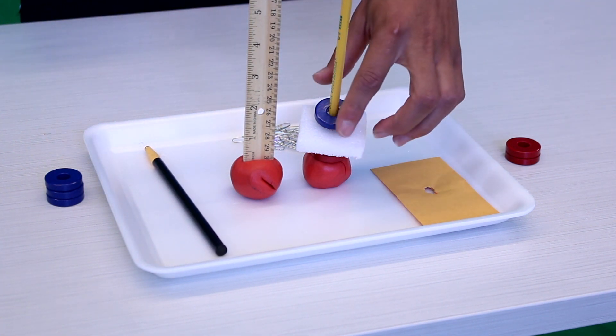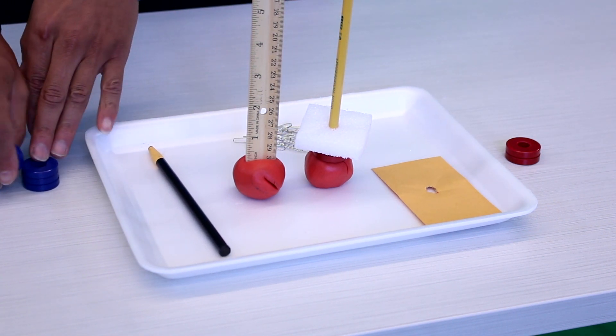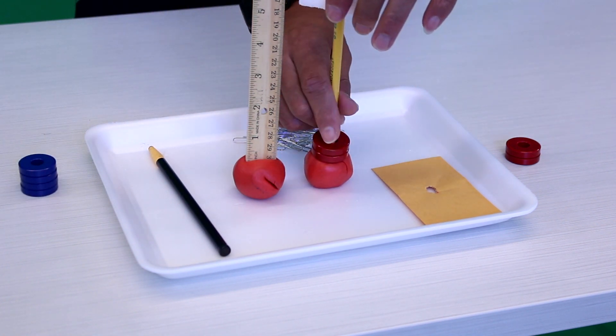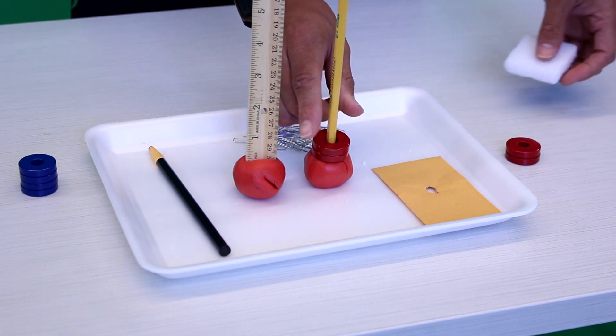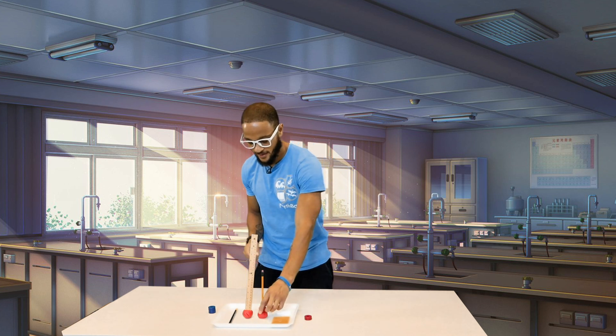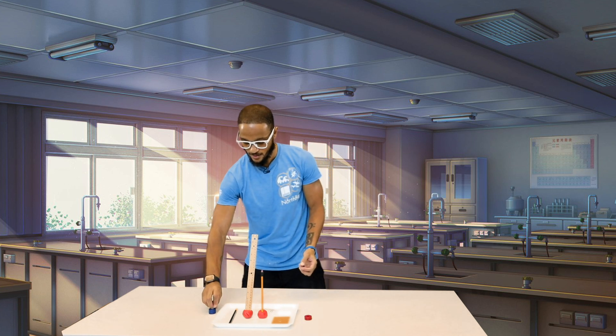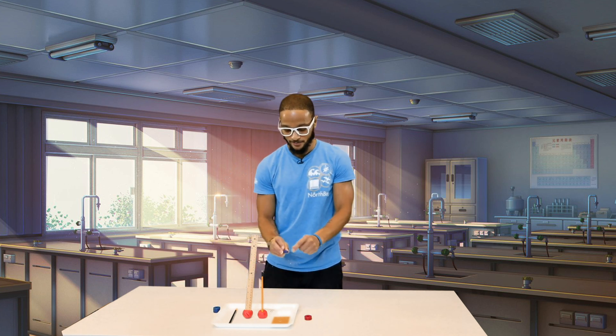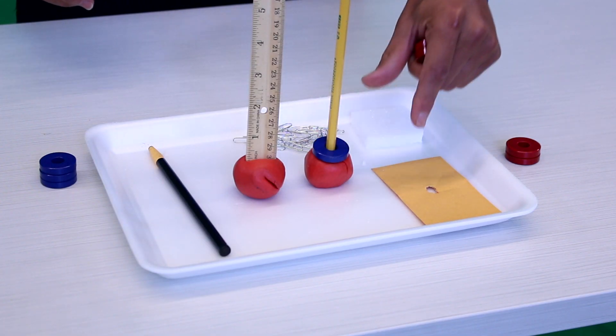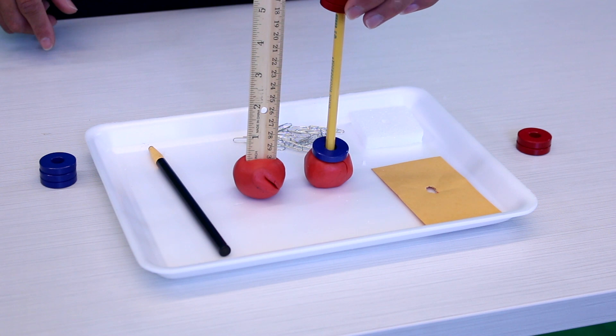So take those off. Oh, a little bit of repellent, all right. Take this off. So I wonder what would happen if I put our blue magnet at the bottom and we take our red magnets and see if it'll repel.